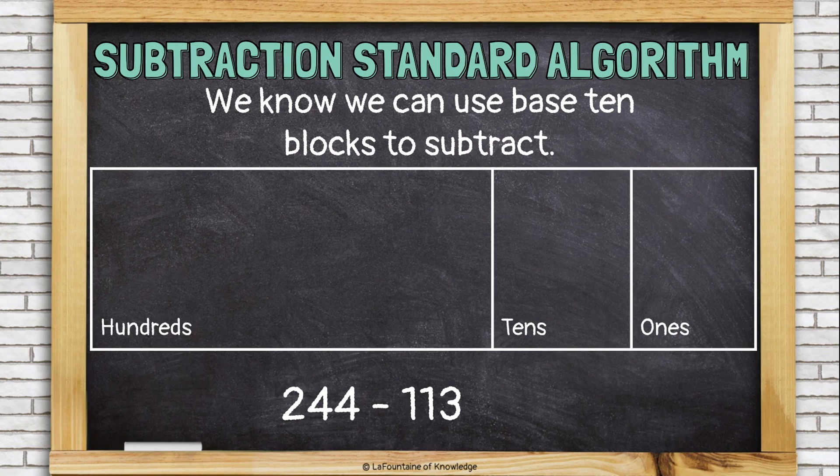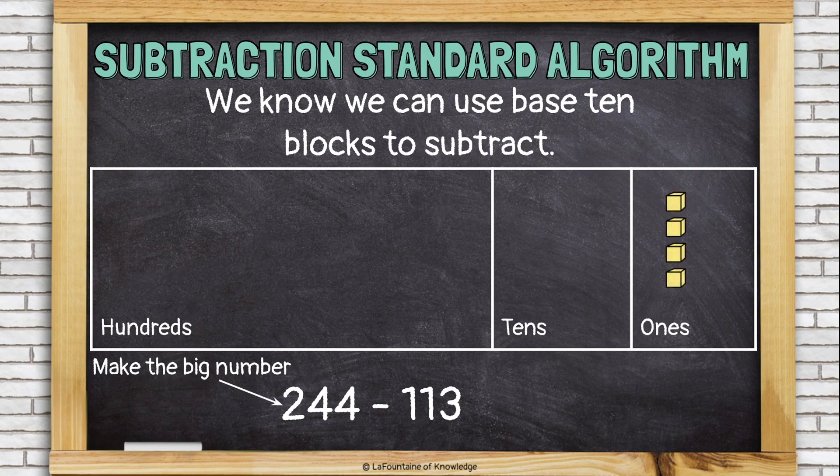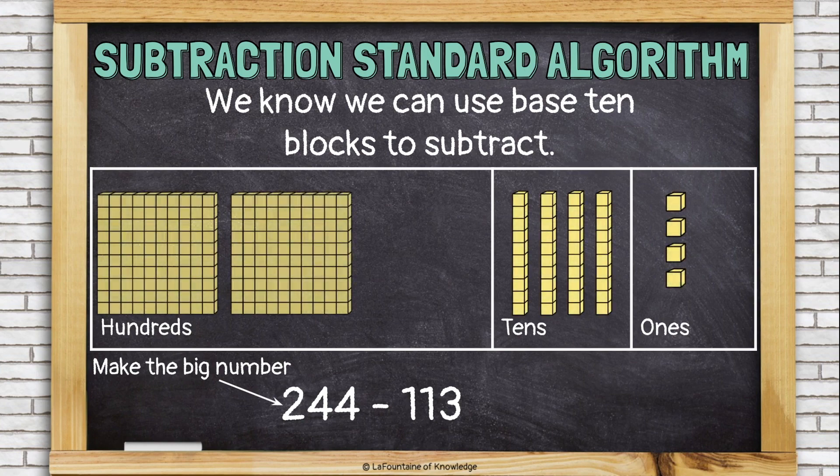We know we can use base 10 blocks to subtract. Let's try using base 10 blocks to subtract 244 minus 113. First, we'll make the big number. To make 244, I need four ones, four tens, and two hundreds.